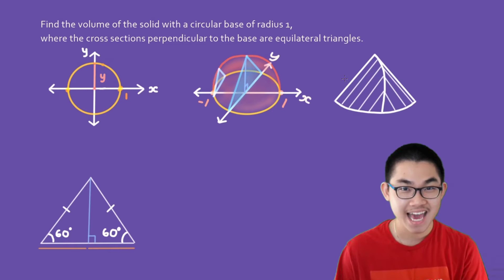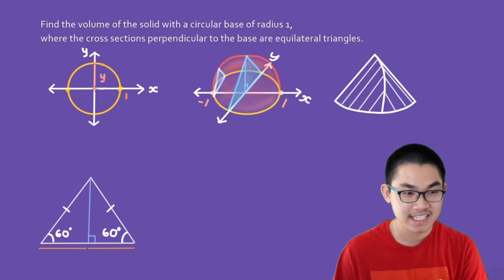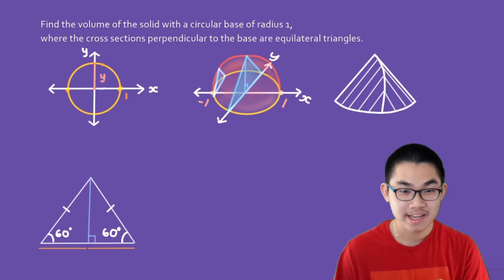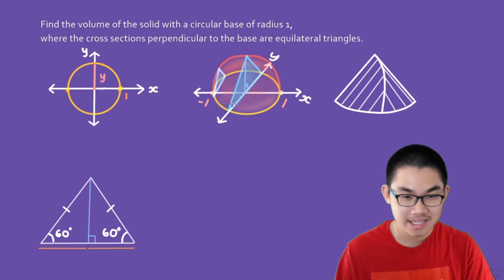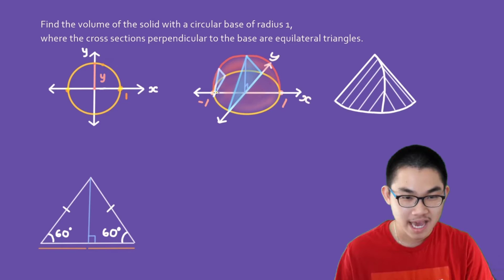We have an object whose base is a circle with radius 1, and we can call the distance from the x-axis to the top of the circle y. If you put that circle on the table, there will be triangular cross sections sticking out of it — like a bunch of cards forming a shape, but these cards are triangles. The biggest cross section is in the center, and as you move left or right, the triangle gets smaller.